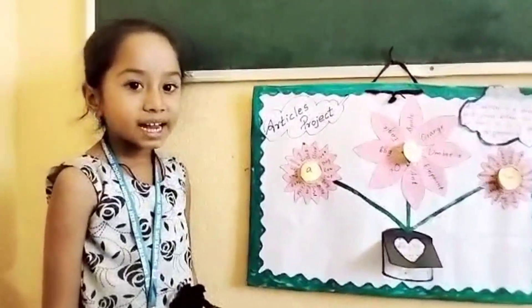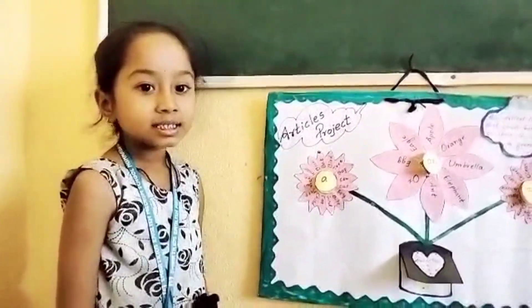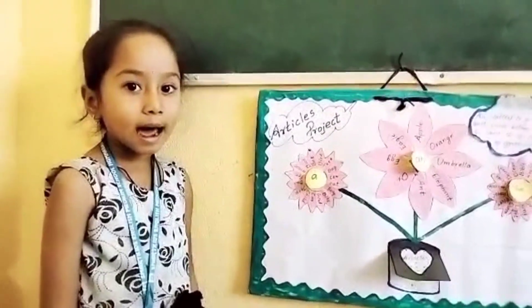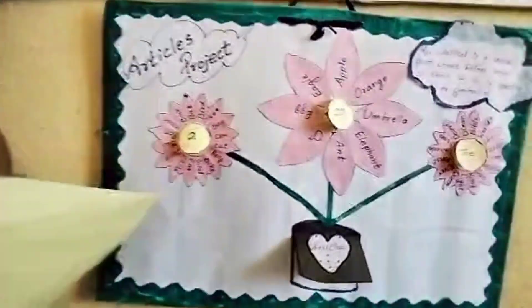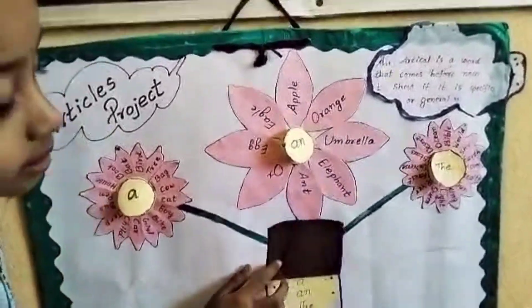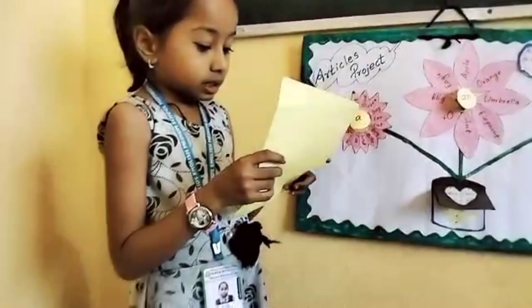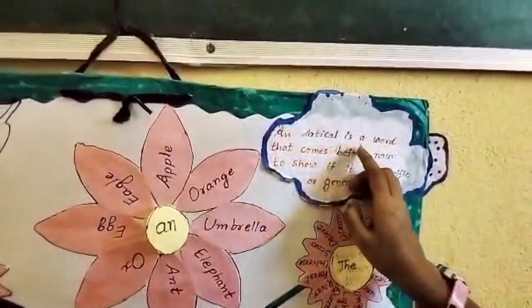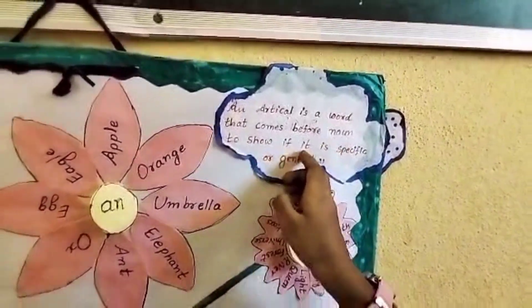Hello friends, my name is Anvika. I am studying in first standard, section Rules. Today I am here to tell you about an article. How many articles are there? There are three articles: A, An, and The. What is an article? An article is a word that comes before a noun to show if it is specific or general.